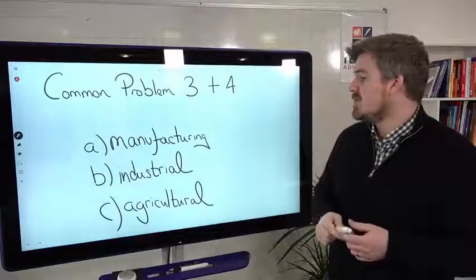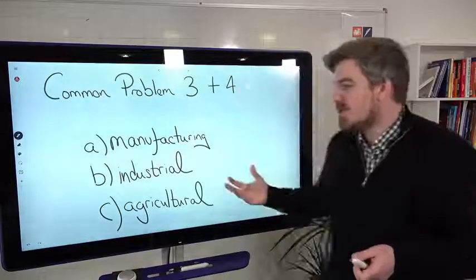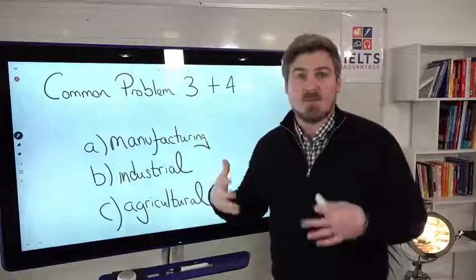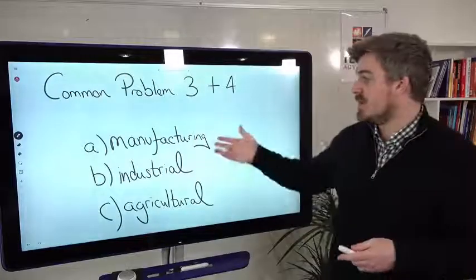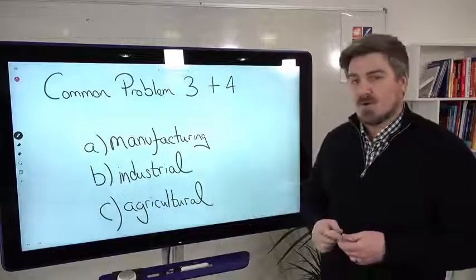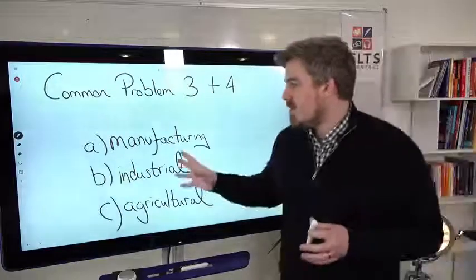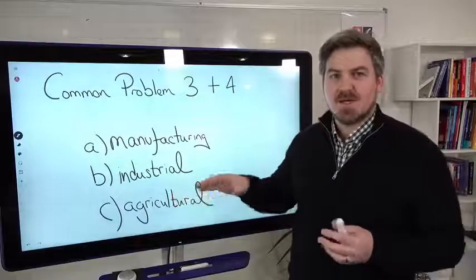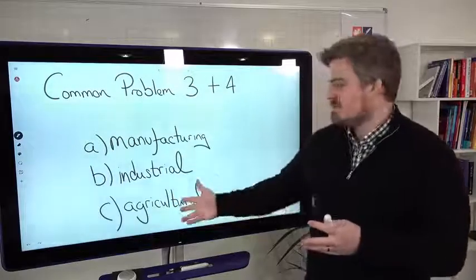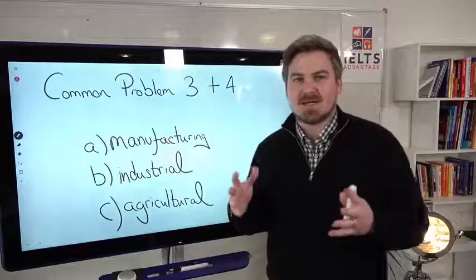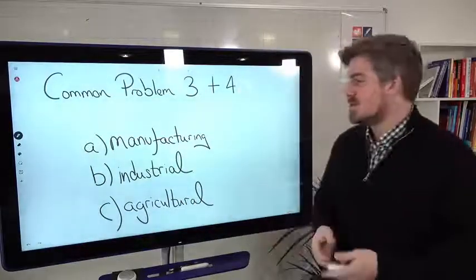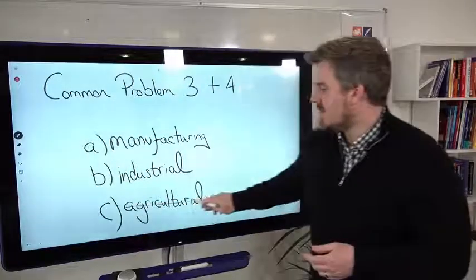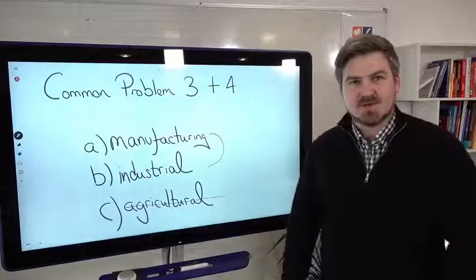Common problems three and four. So the first common problem when it comes to here, imagine you're listening and it's talking about a business and what the type of business is. So it could be a manufacturing business, an industrial business or an agricultural business. The first problem is you might not understand what one of these words mean. And many people would panic and be like, oh, I don't know what agricultural means. And then you're going to panic and not really know what to do and you're gonna get really stressed out. The other problem is, let's say, it's definitely not this one, but it's maybe manufacturing or industrial.